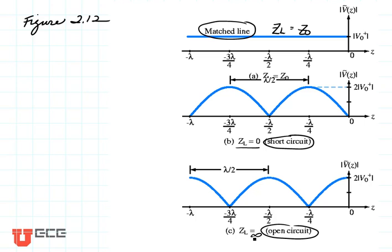Take a look at what the standing wave envelope is in all cases. For this matched line, Vmax is the value of V0+ everywhere along the line. The minimum value, Vmin, happens to be the same thing. So the standing wave ratio for a matched line is Vmax divided by Vmin, which equals one.